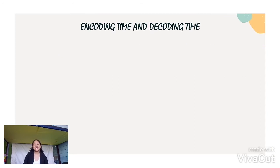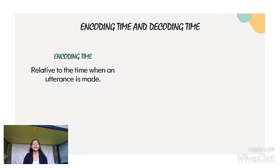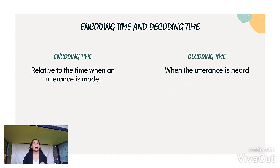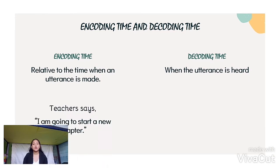So what is encoding time and decoding time? A renowned linguist Fillmore explains that in the case of time diaccess, time adverbs can be used relative to the time when an utterance is made. Fillmore calls this time as the encoding time, or ET. On the contrary, he calls the time when the utterance is heard as the decoding time, or DT. While these are frequently the same time, they can differ as in the case of pre-recorded broadcast or correspondence.